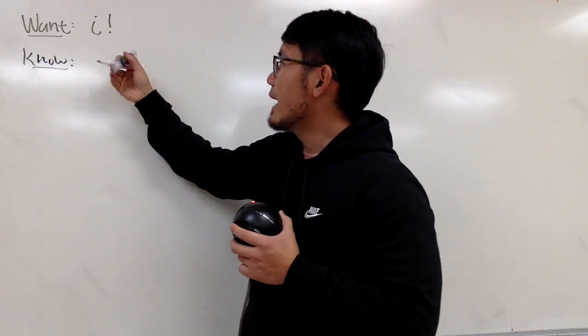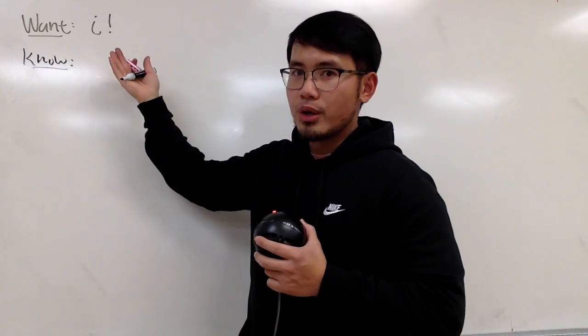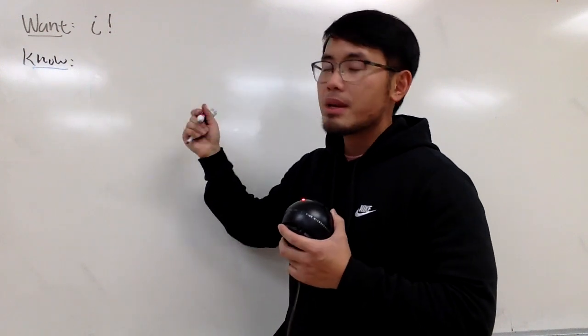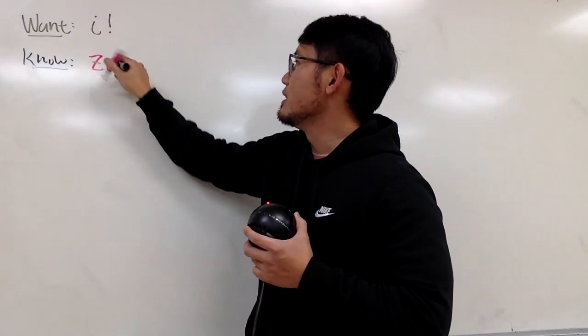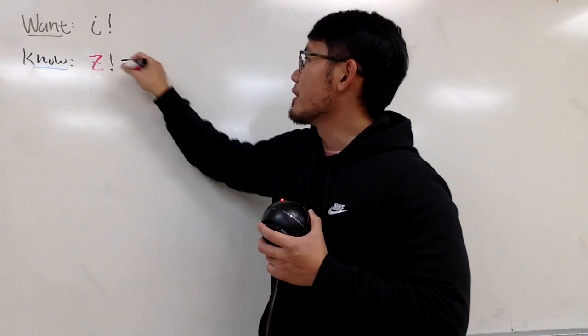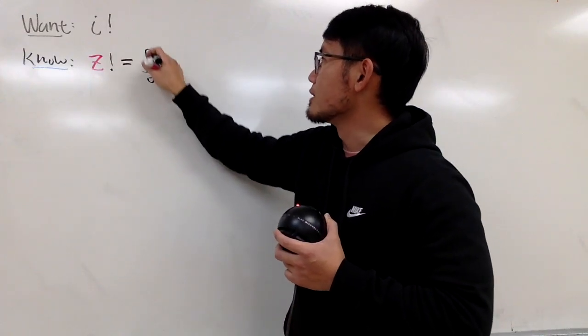Right here, we know that if we have x factorial, we can use that as integral. But since we have i, which is a complex number, let me write down z. So, z factorial, this right here, we can write it as the integral from 0 to infinity,